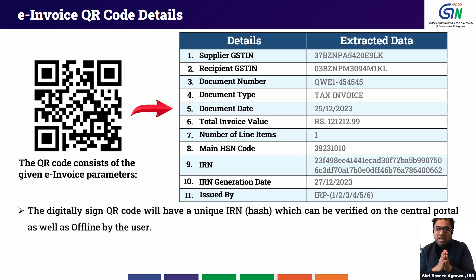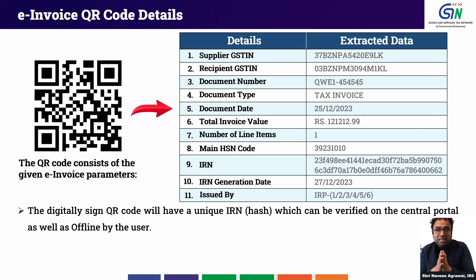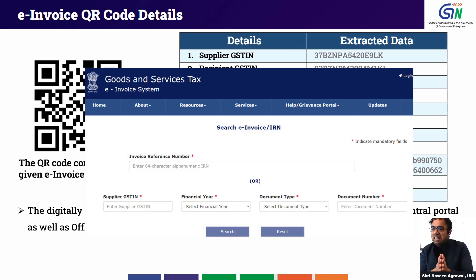In online mode you have a very limited set of attributes — you can only check whether the IRN is active or cancelled. In offline mode you can verify all the attributes embedded in the QR code. However, you will not be able to verify whether the IRN number is active or cancelled via the QR code. So if you have any doubt about the IRN status, after QR code verification you should use the Search IRN functionality on the e-invoice portal.